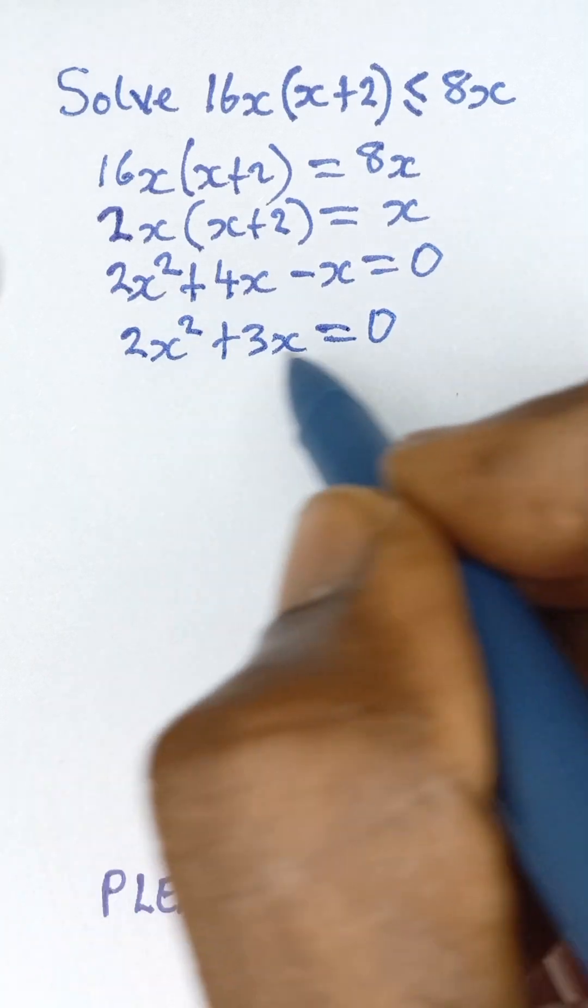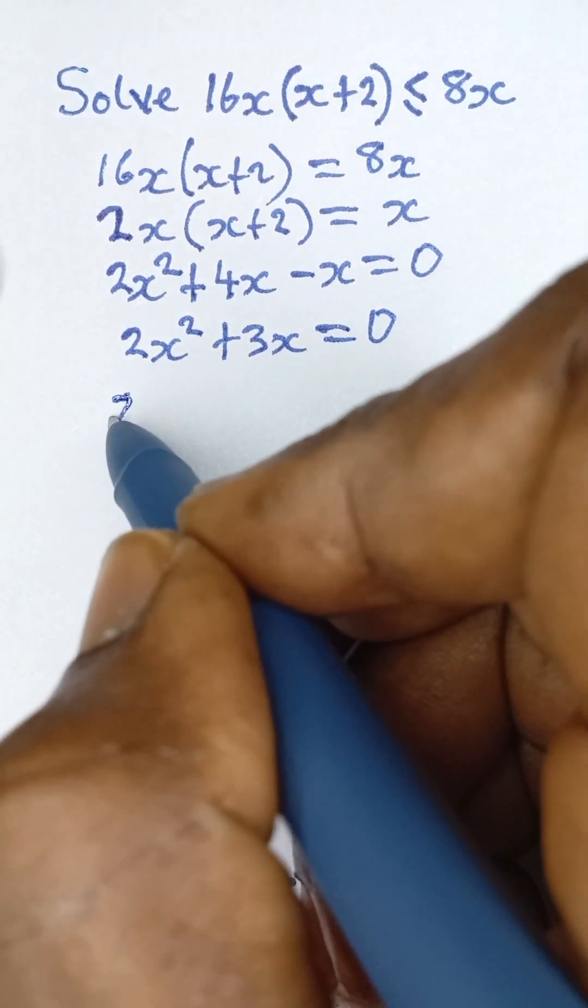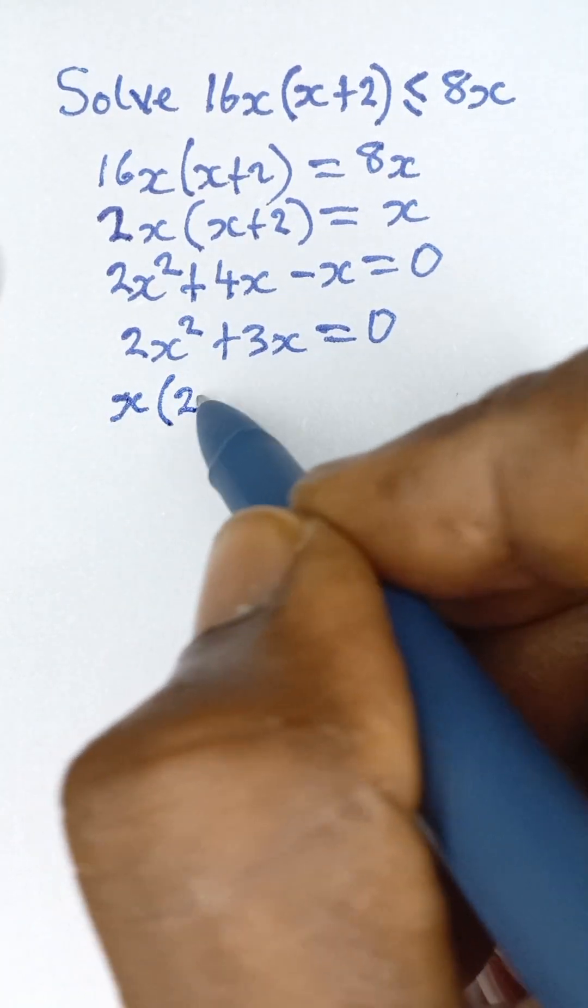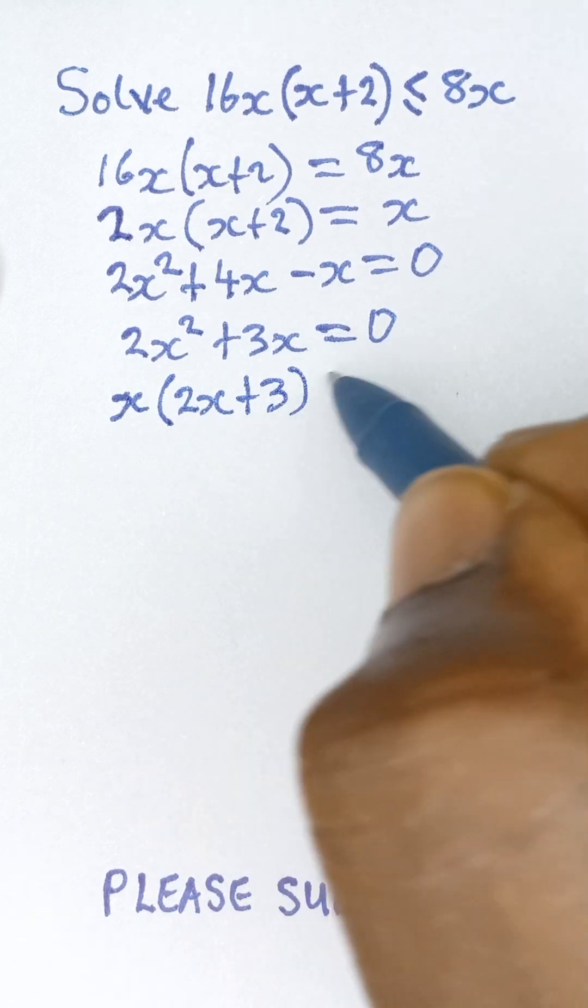I can simply factor this. I can take out x and then I have x(2x+3) = 0.